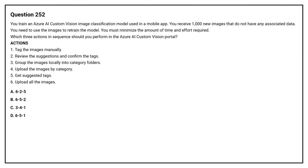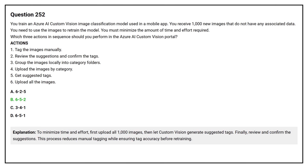The correct answer is Option B: 6, 5, 2. To minimize time and effort, first upload all 1000 images, then let custom vision generate suggested tags, and finally review and confirm the suggestions. This process reduces manual tagging while ensuring tag accuracy before retraining.